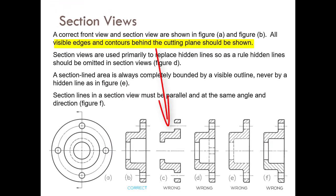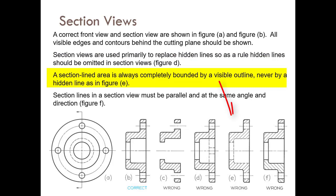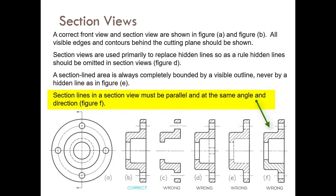C is wrong because visible edge contours behind the cutting plane should be shown — you must not erase visible lines. D is wrong because section views are used primarily to replace hidden lines — you must omit hidden lines from the back. E is wrong because the section line area must always be completely bounded by visible lines — change hidden lines to visible lines. F is wrong because section lines must be parallel and at the same angle — in this case they are in opposite directions, 145 and 135 degrees.